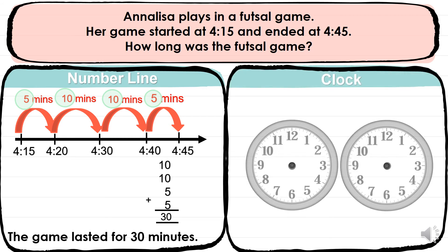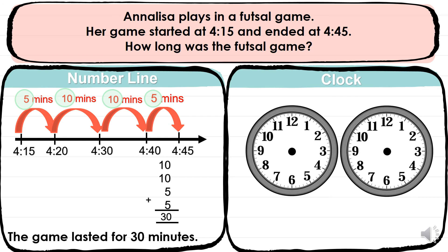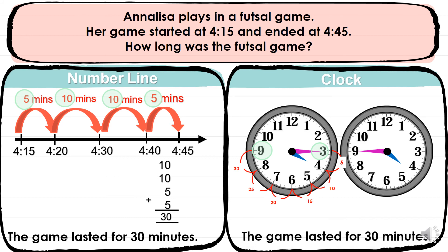Now let's do the clock method. The start time is 4:15 and the end time is 4:45. The hour hand points to the 4, and for 15 minutes, the minute hand points to the 3. For 4:45, the hour hand still points to the 4 and the minute hand points to the 9. Let's circle the 3 where we started and the 9 where it ended, then skip by 5: 5, 10, 15, 20, 25, 30. The game lasted for 30 minutes. So either way, you still get the same answer.